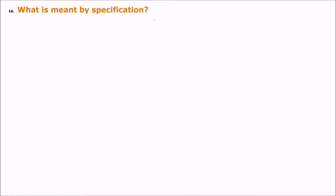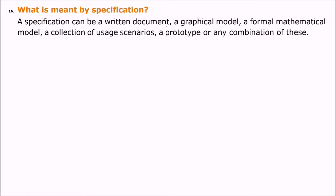What is meant by specification? Specification is a written document, graphical model, formal mathematical model, collection of use scenarios, or a prototype — or any combination of these — used to specify something, most often to specify requirements.